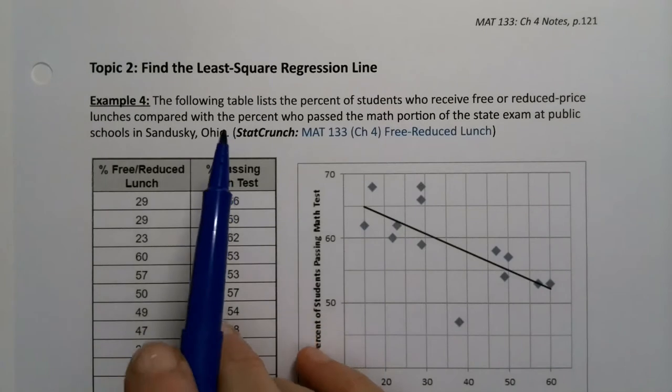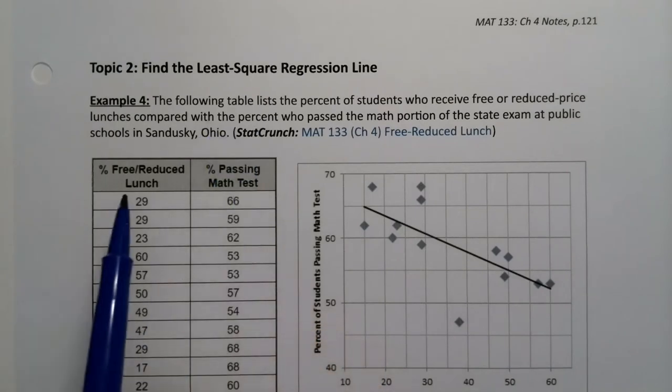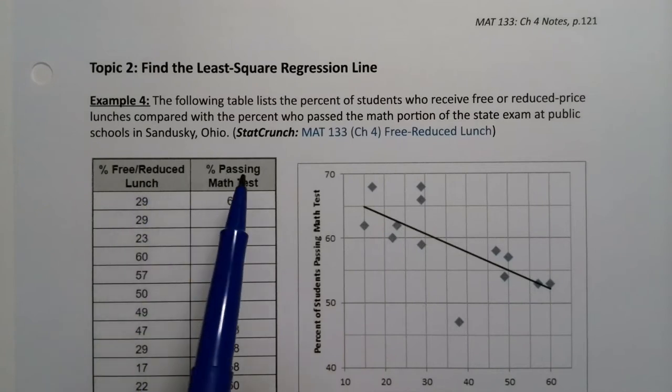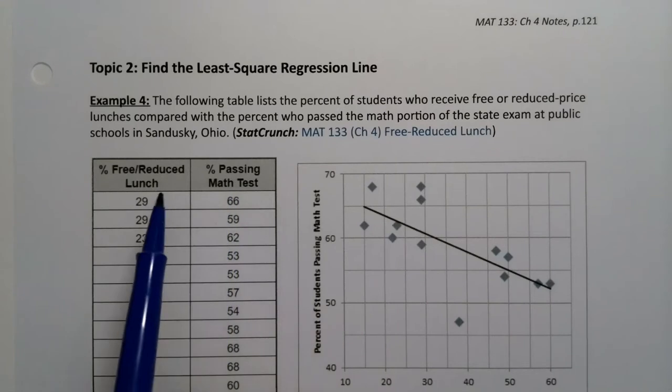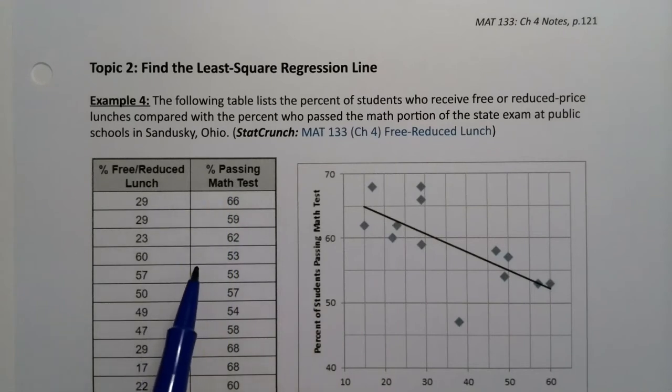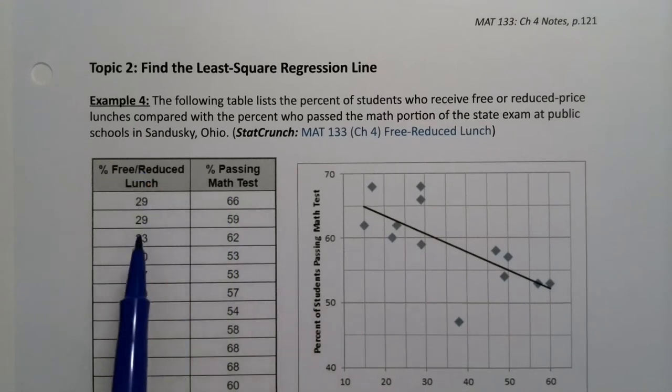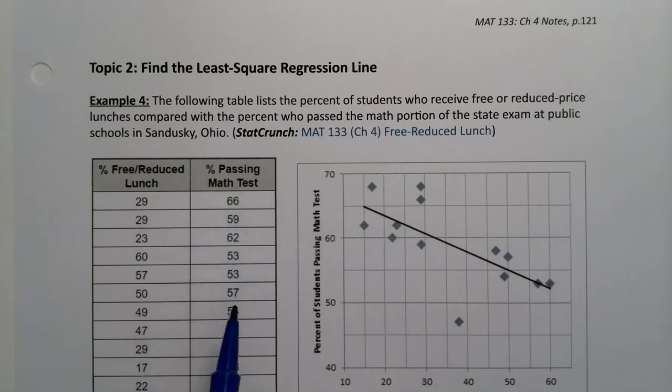This is the same example we were working with in 4.1. The following table lists the percent of students who receive free reduced lunch and the percent who pass the math portion of the state exam at public schools in Sandusky, Ohio. Here's the percent receiving free reduced lunch, here's the percent passing the math test.